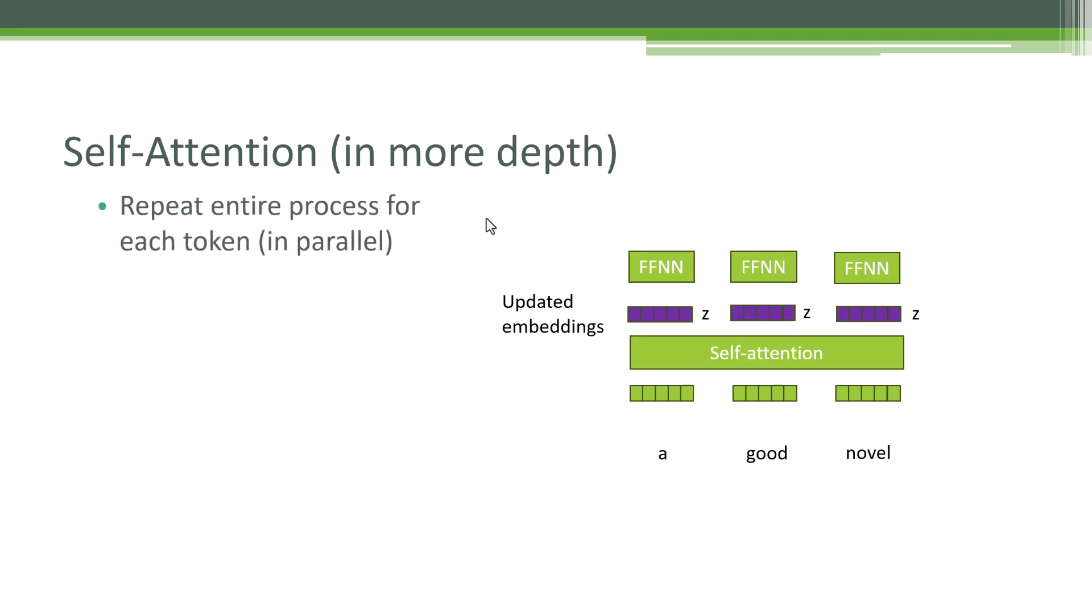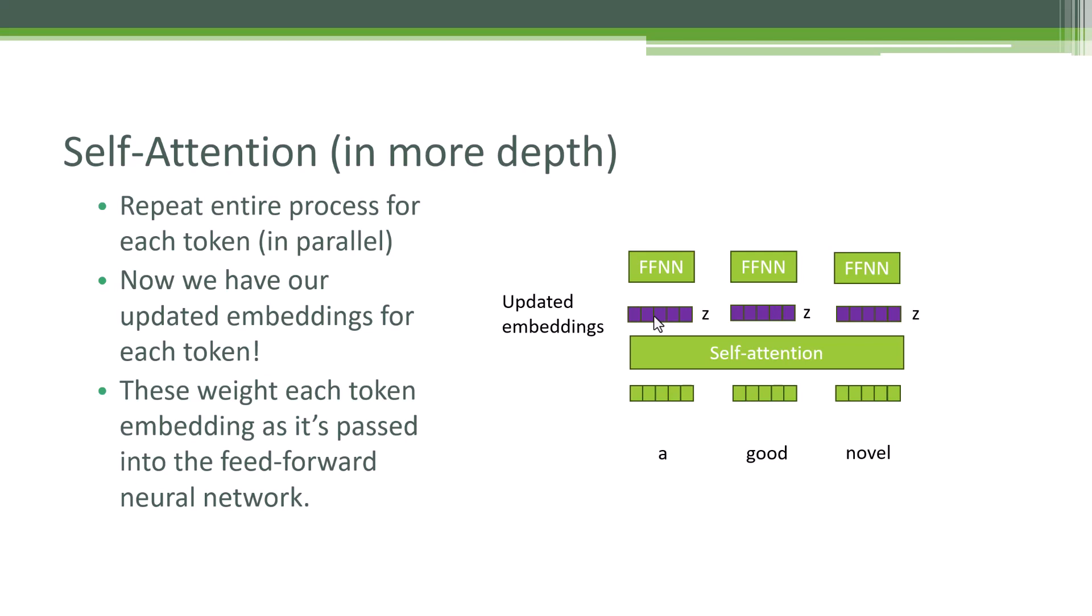So we do that for every token. We do it for A, we do it for good, we do it for novel. And this all happens in parallel because there's nothing about this that is not parallelizable. That's the key to making this stuff scale up to the point where it is today. So after doing that, we end up with this Z token that is an embedding for each token in parallel. So that is our updated embedding for each token that is representing where in the space of language this token's true meaning lies. And it may seem like magic, but like any neural network, the magic is just in the training and the back propagation and reinforcing weights and biases with correct results at the end of the day during the training process. At that point, we have something we can feed into the feedforward neural network sitting on top of the self-attention layer. That's self-attention in a nutshell.